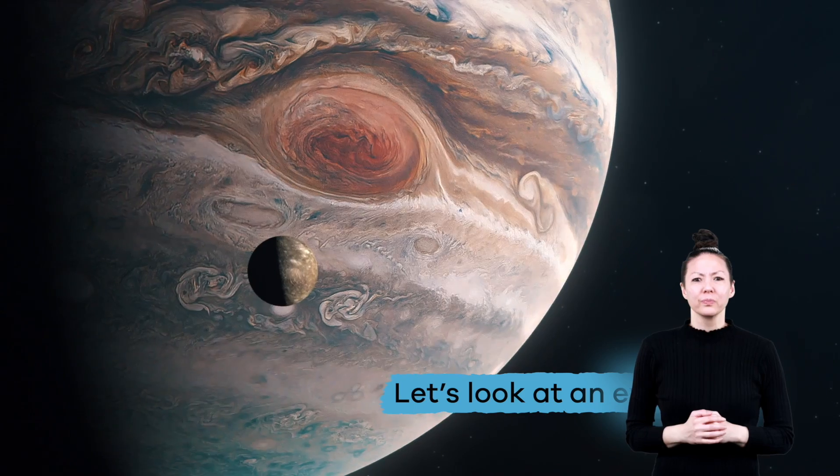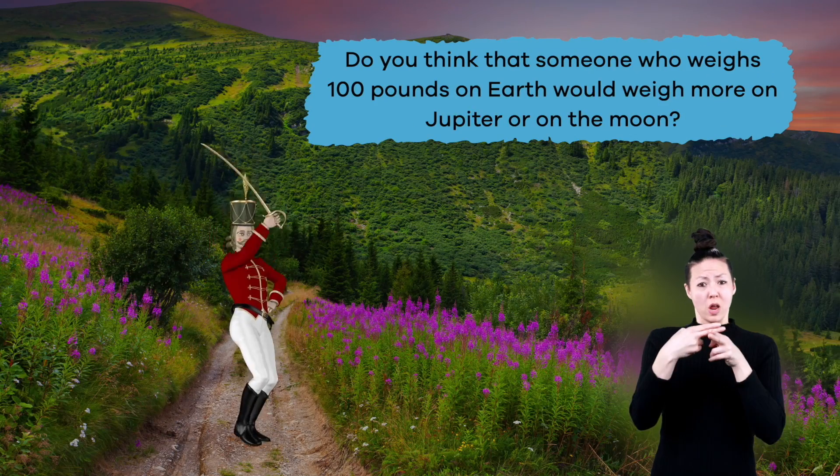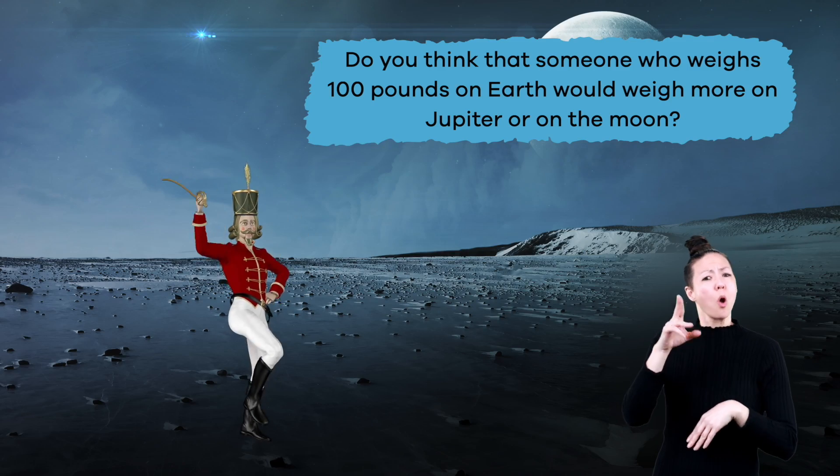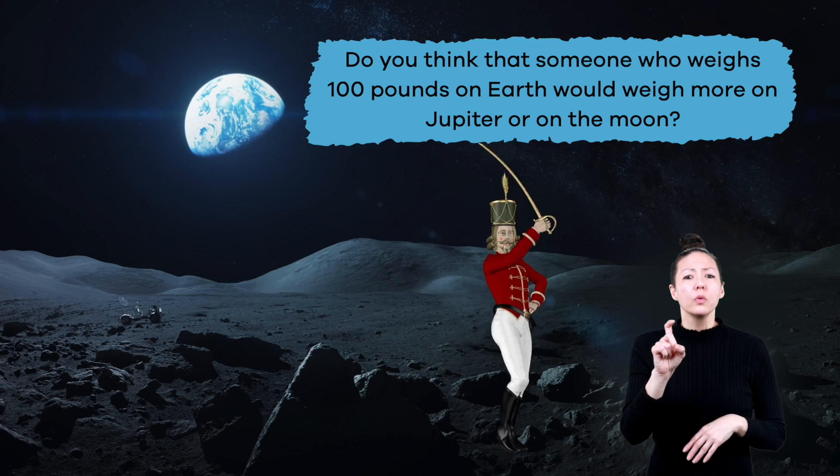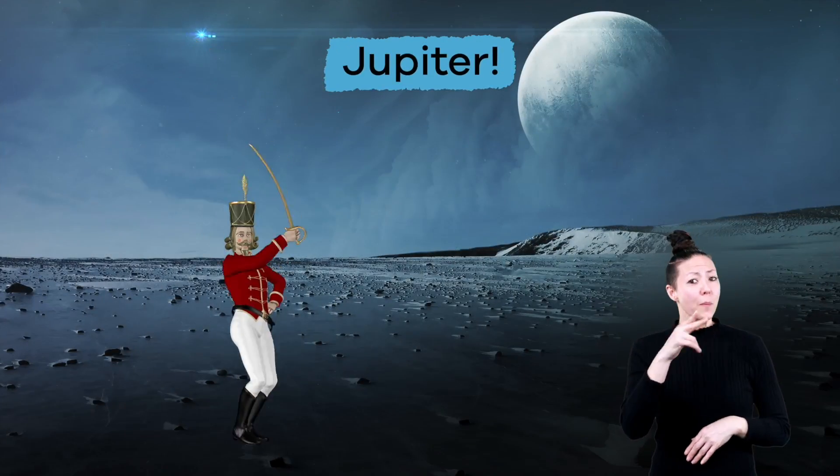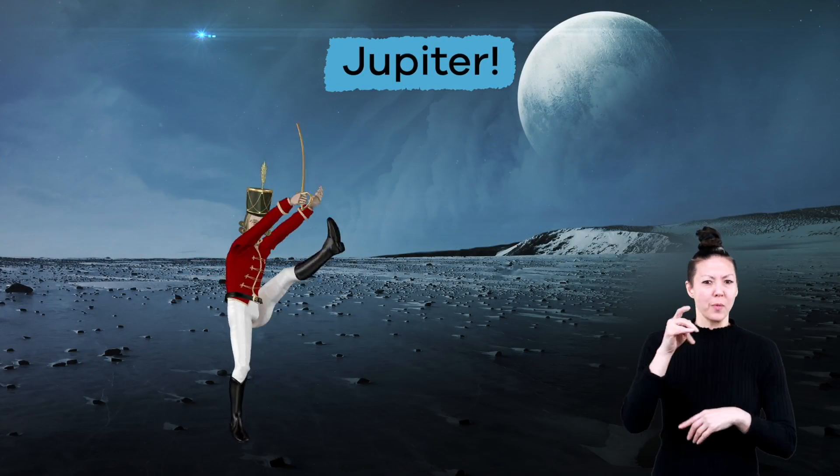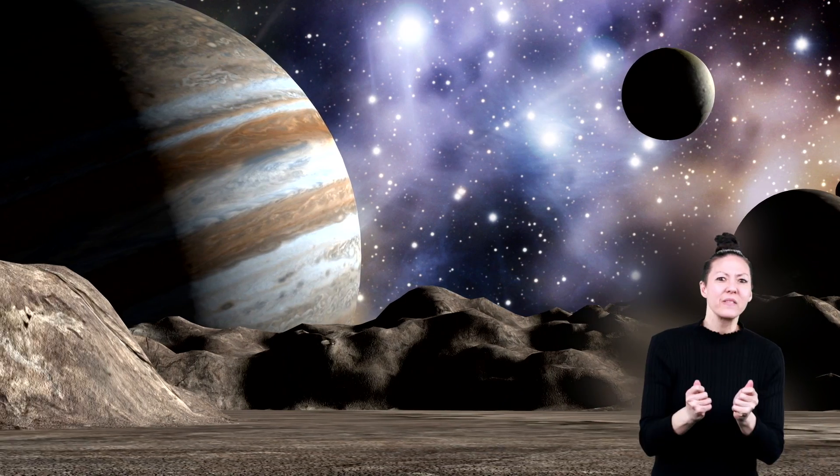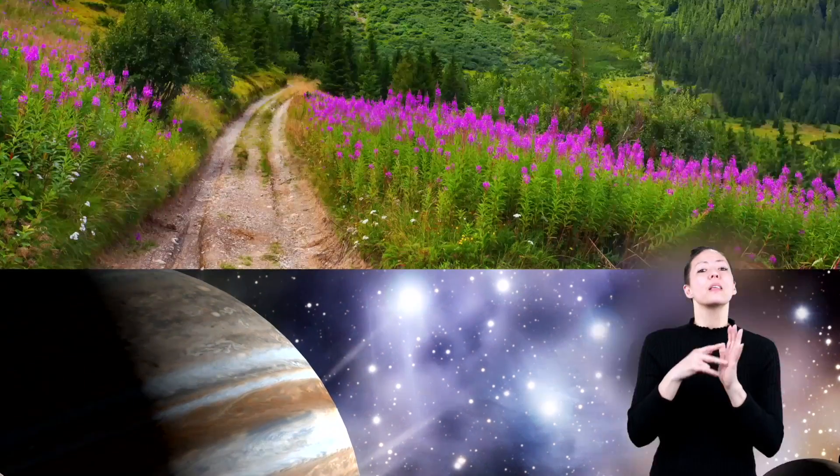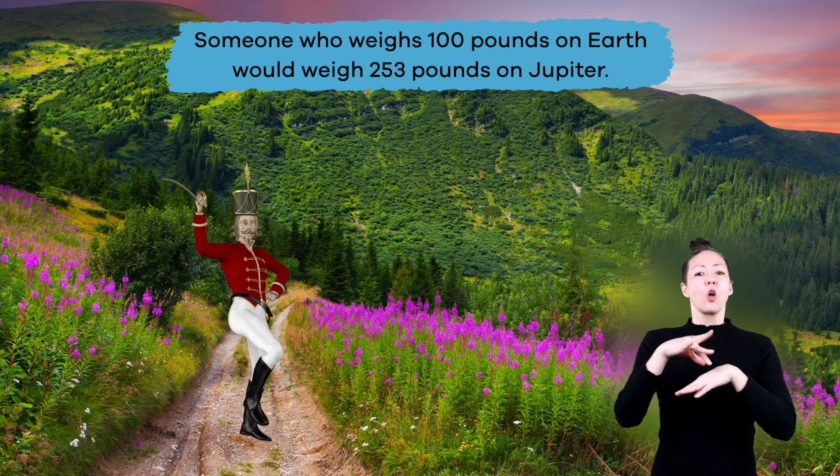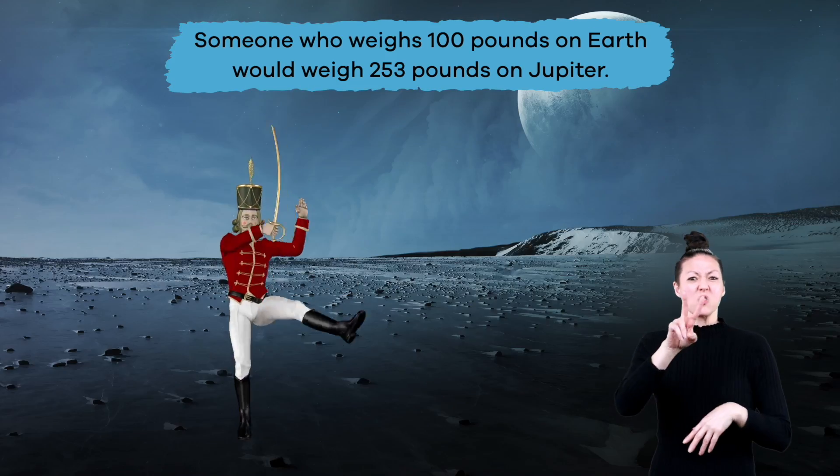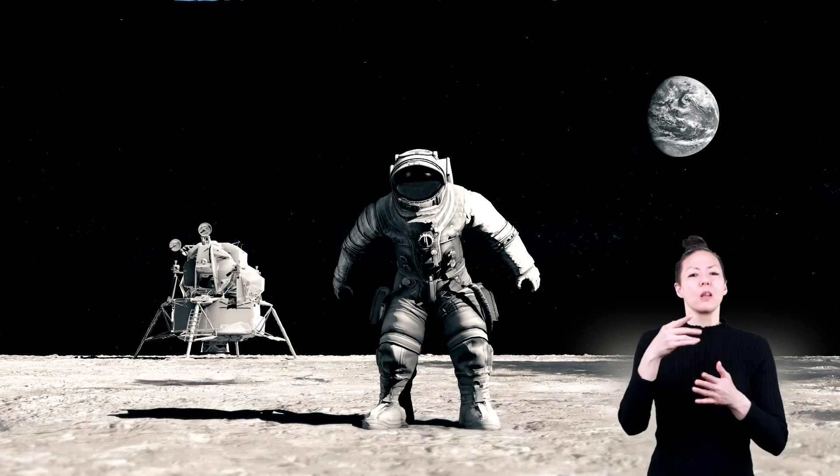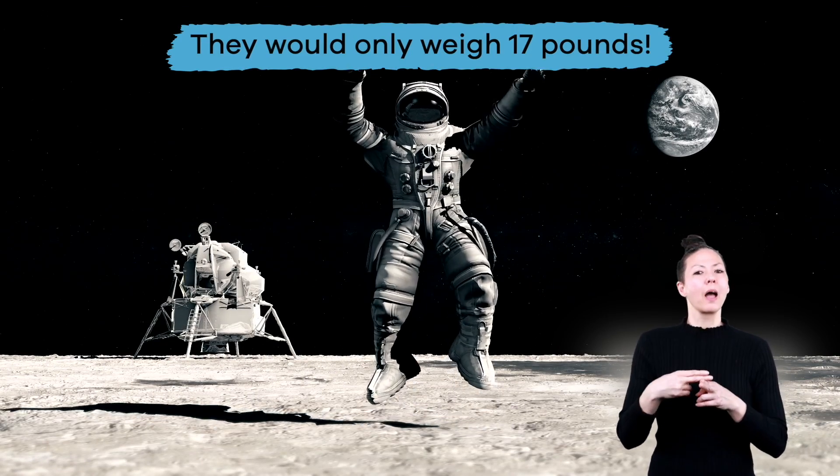Let's look at an example. Do you think that someone who weighs 100 pounds on Earth would weigh more on Jupiter or on the Moon? If you said Jupiter, you're right. Since Jupiter has more mass, its gravitational pull is greater. Which means that someone who weighs 100 pounds on Earth would weigh 253 pounds on Jupiter. On the Moon, they would only weigh 17 pounds.